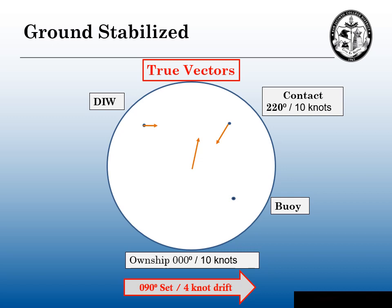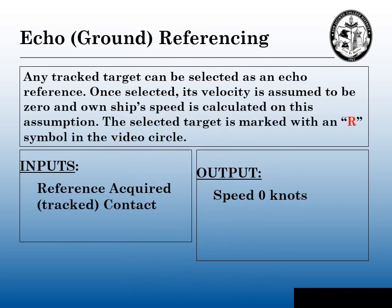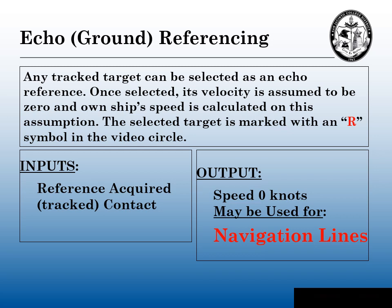It is not good for collision avoidance. Echo referencing or ground referencing — you can pick any acquired track target on your ARPA. When you acquire that target, the velocity is assumed to be zero knots, and our own ship's motion is calculated based on this assumption. When you acquire the target, there will be an R next to the contact. The input needed is an acquired contact — I'll be using a buoy for my explanation — and the output is going to be zero knots. This is best used for coastal and inland navigation.